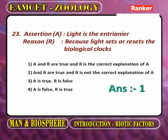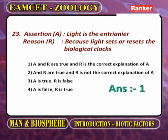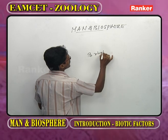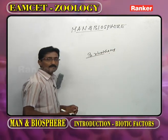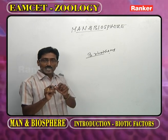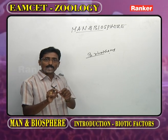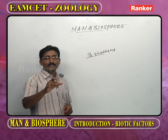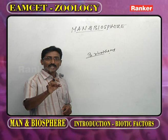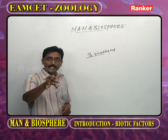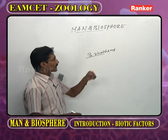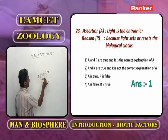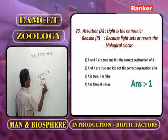Assertion: light is a zeitgeber (entrainer). Reason: light sets or resets biological clocks. Biological rhythms are regular occurrences of biological activities at regular intervals within a specific time. Biological rhythms associated with 24 hours of a day are called circadian rhythms.